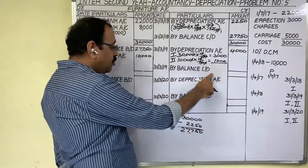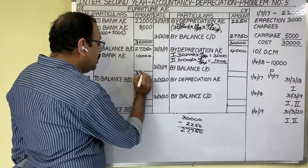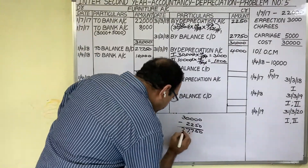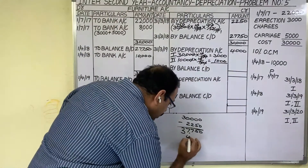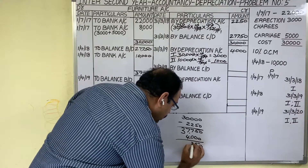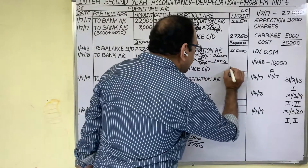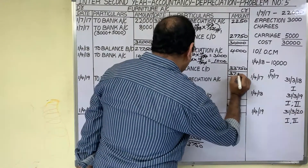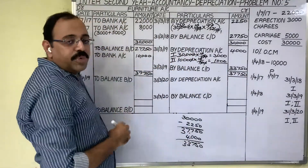Find the balance carried down: debit total is 37,750 minus credit total 4,000 rupees equals balance carried down of 33,750. Write down the total on the credit side as 37,750. Second year completed.